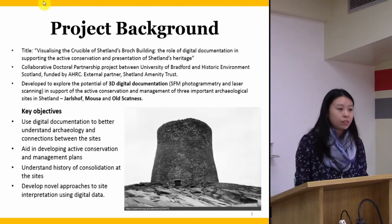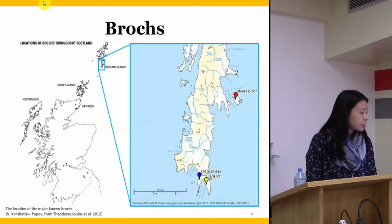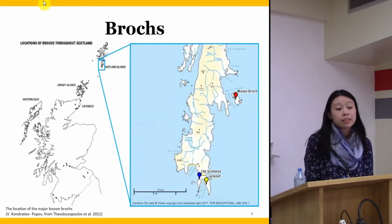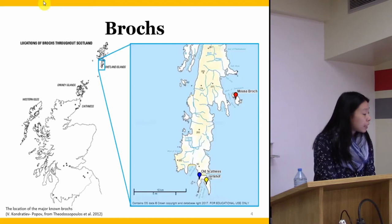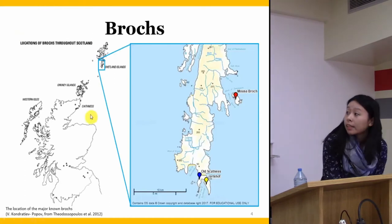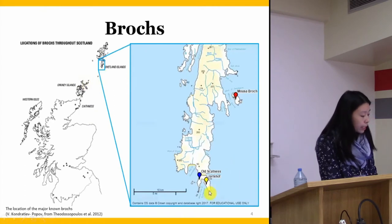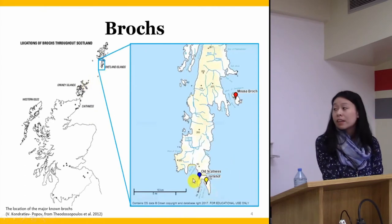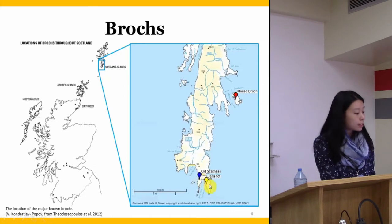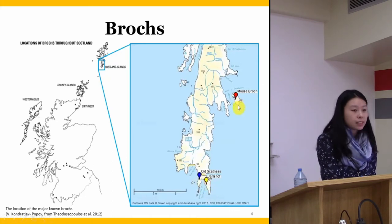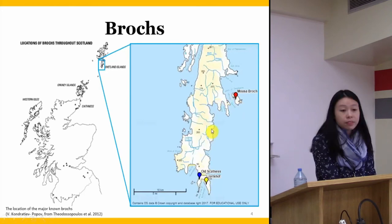So where are we in the world? Brochs are only found in Scotland, mostly in the North and Atlantic West. The sites that I'm looking at are here in Shetland, all based in the South. Two are on the mainland — Old Scatness and Jarlshof — they're less than 2km apart. And Mousa is situated on the tidal island of Mousa, which is just a couple of miles north of these two sites.